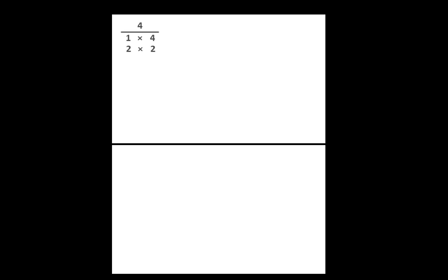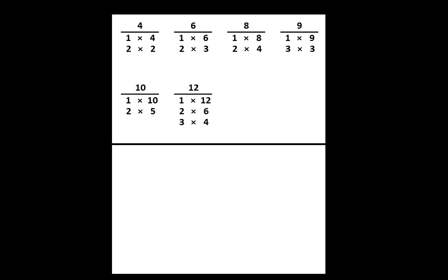This is a preview of what you will see in this video. We will use the top half of a piece of paper to record the factor pairs of 8 numbers: 4, 6, 8, 9, 10, 12, 14, and 15. At the end of the video, your paper will look like this.